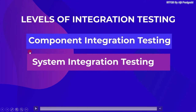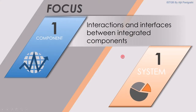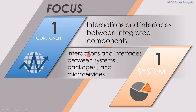There are two levels in integration testing: component integration testing and system integration testing. Component integration testing focuses on interactions and interfaces between integrated components — very simply, between two components if we have an interaction or interface. System integration testing focuses on interactions and interfaces between systems, packages, and microservices. We will see them in more detail in upcoming lectures.